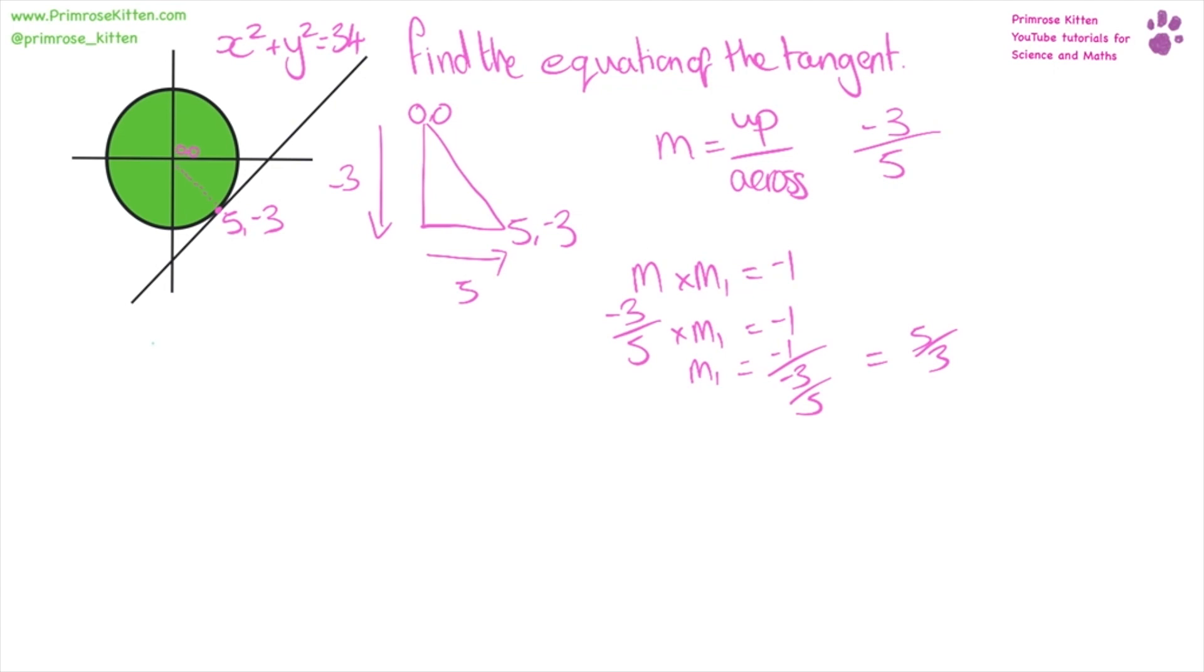Now, we know the equation for a straight line is y equals mx plus c. And we know lots of this information already. So, y equals five over three x plus c. Five over three being the gradient that we've just worked out over here.